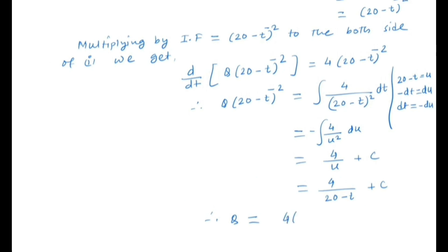So we get Q = 4(20-t) + c(20-t)² which is the general solution.